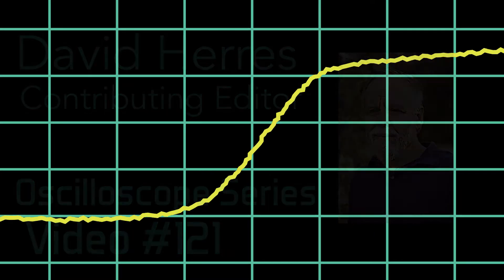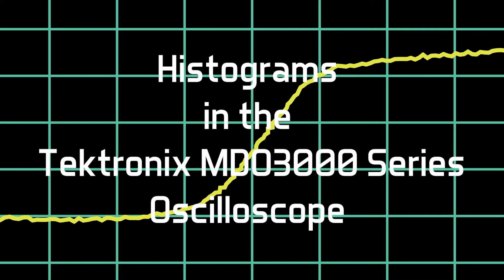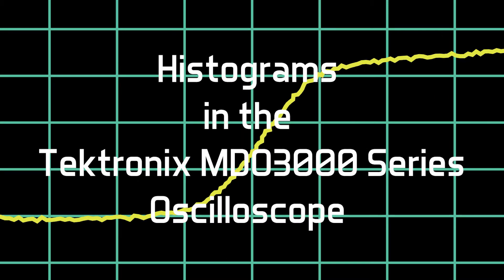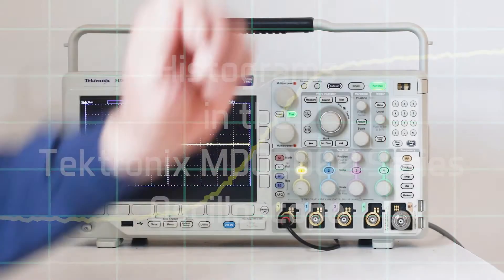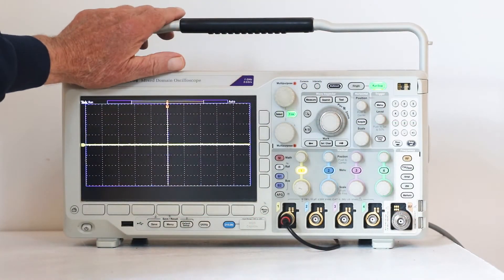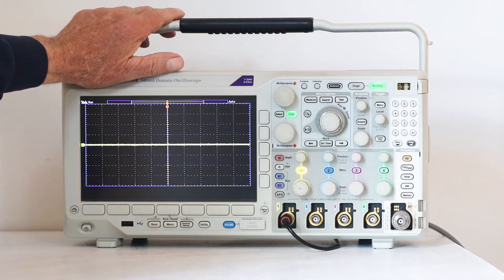Hi and welcome to our 121st test and measurement video. Today we'll look at histograms in the Tektronix MDO3000 series oscilloscope.